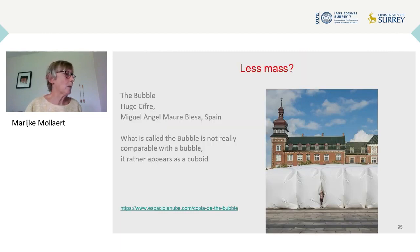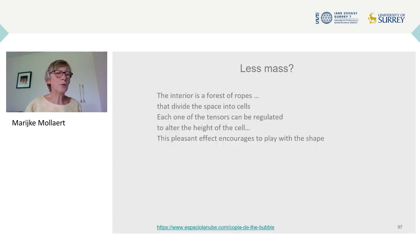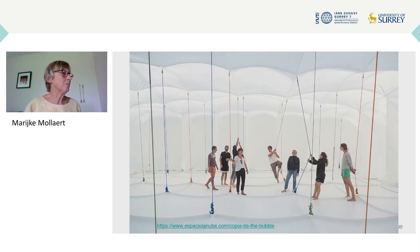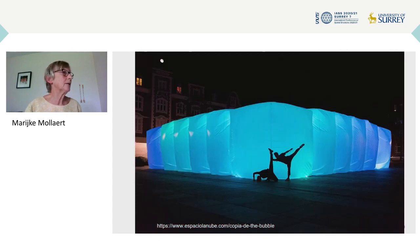The next element is weight. This bubble is in fact rather a cuboid. The self-weight of this structure is not much more than the weight of the skin. The visitors are literally sucked into the interior and enter through vertical slit-like openings. The interior is a forest of ropes that divide the space into cells. Each one of the tensors can be regulated to alter the height of a cell. Internal pressure and the flexibility of the skin allow for shape adjustments and even artistic performances inside and outside.